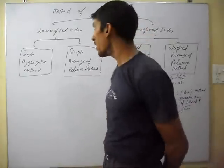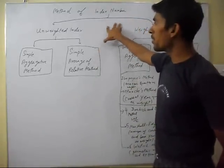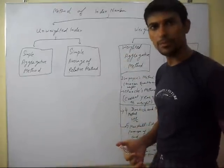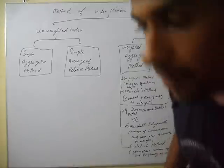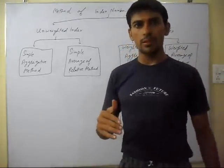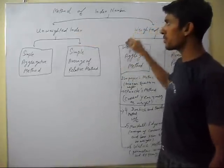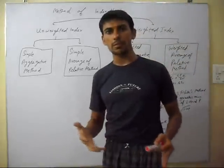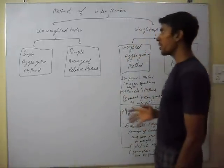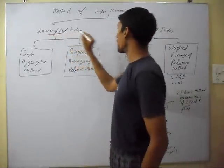Dear friends, now we will discuss the methods of index numbers. There are two methods: one is the unweighted index number and the second is the weighted index number. First of all, we should know what weight means.